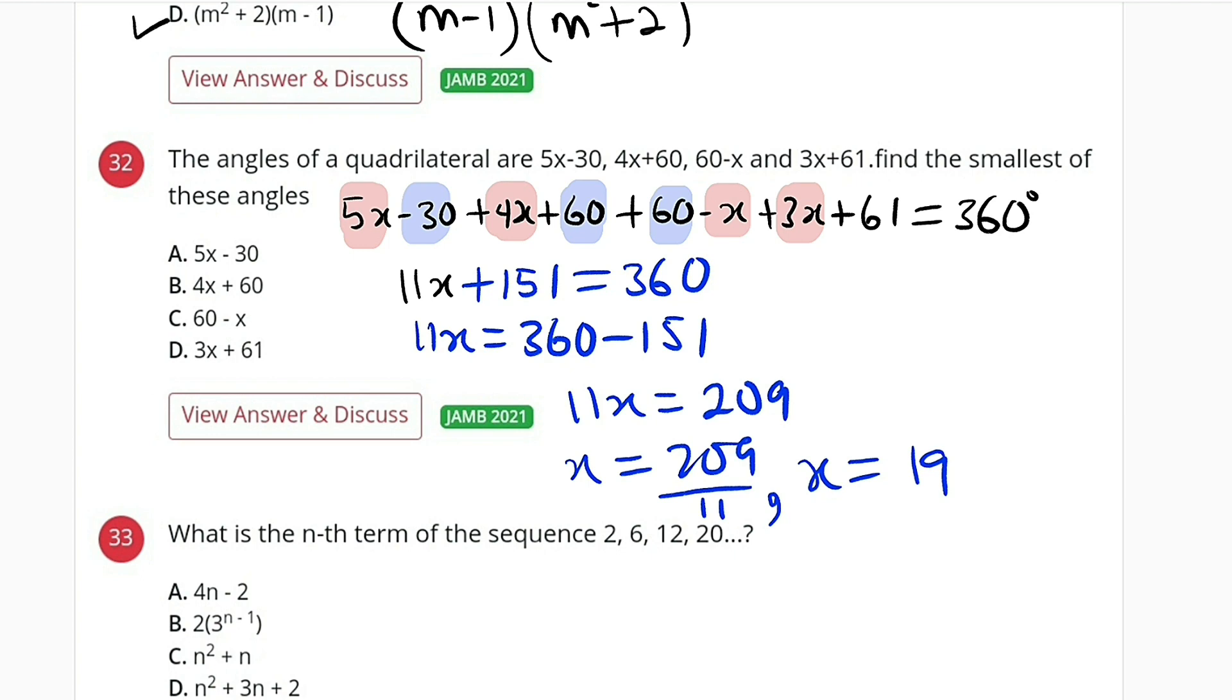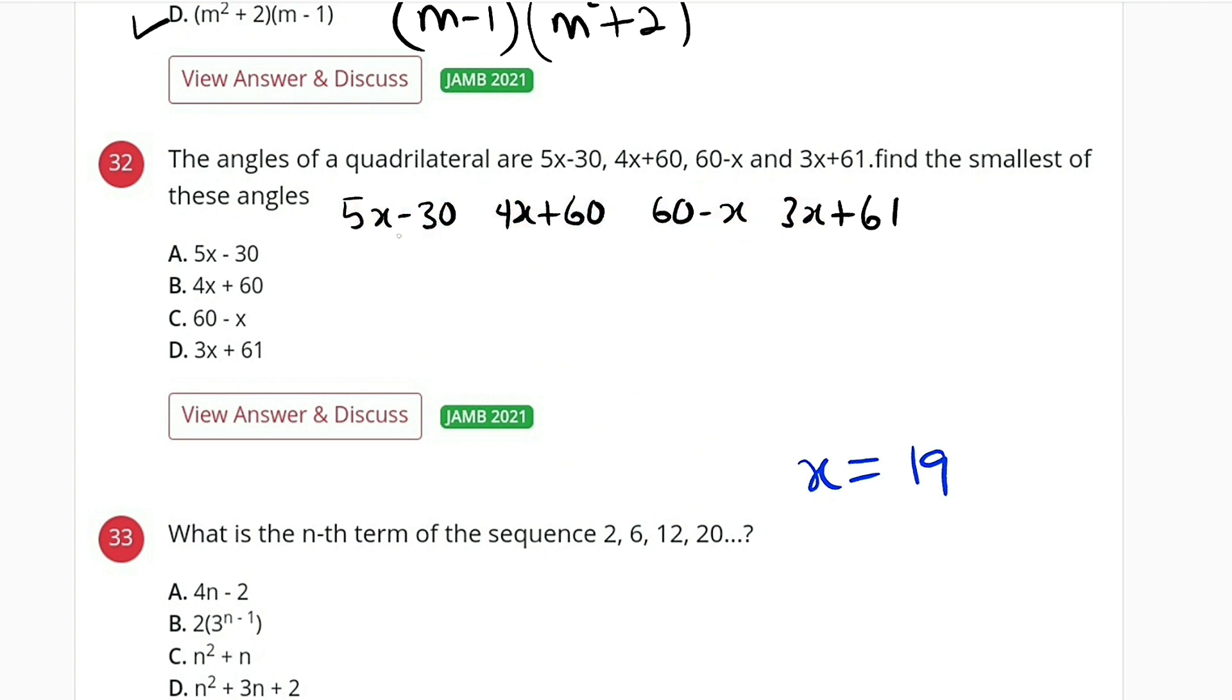If x equals 19, let us find all of these angles. The first one: 5 times 19 minus 30, that will give us 65.